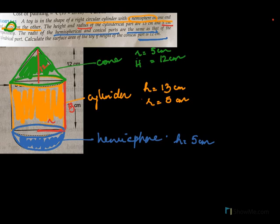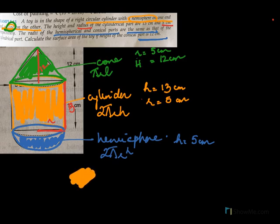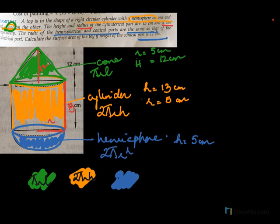To find the surface area, we add three surfaces: the cone's CSA which is πrl, the cylinder's CSA which is 2πrh, and the hemisphere's CSA which is 2πr². We need to add up all three of these.